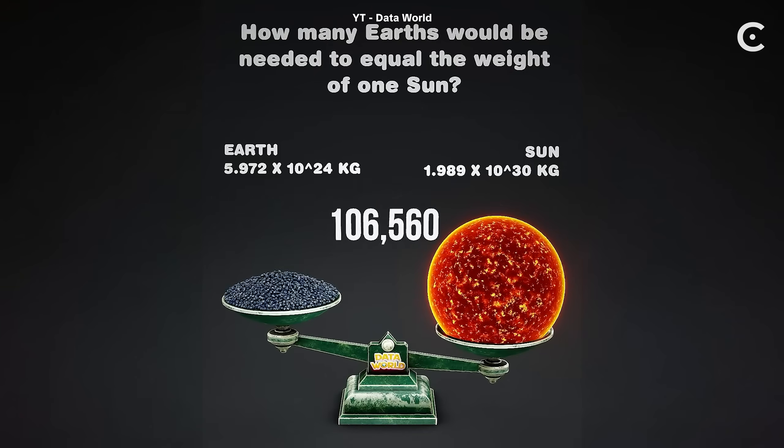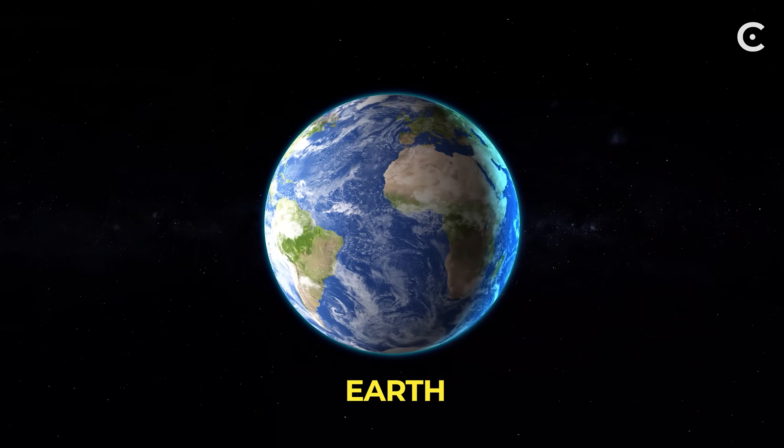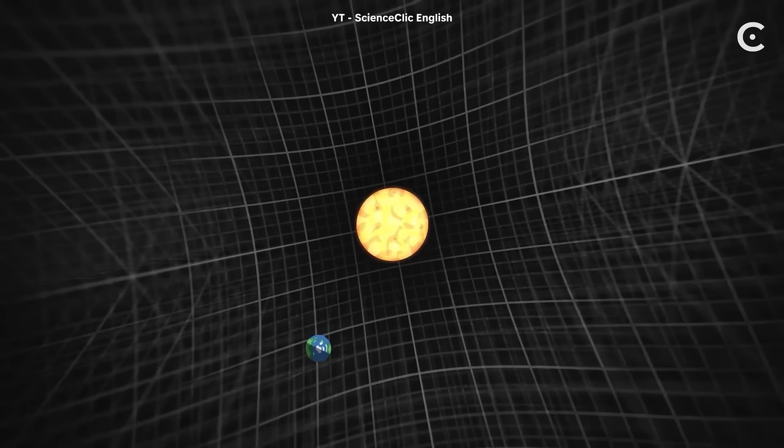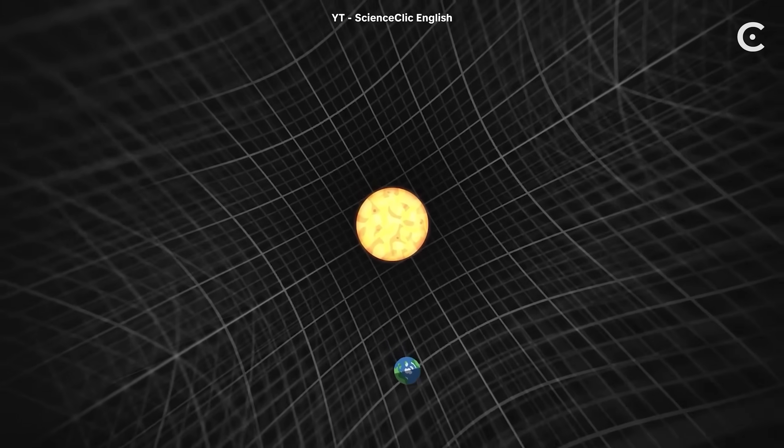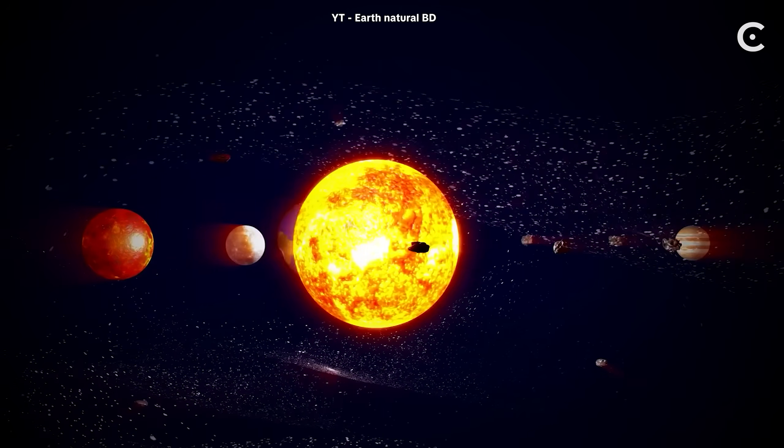Our sun, which weighs as much as 333,000 Earths, creates so much stress-energy that it warps space-time for billions of miles around it. Mercury, Venus, Earth — we're all just following the curves of this warped reality. You think Earth orbits the sun because of gravity's pull, right? Nope. Earth is actually travelling in a straight line. It's just that space-time itself is so curved around the sun that a straight path appears as an orbit — like an ellipse.